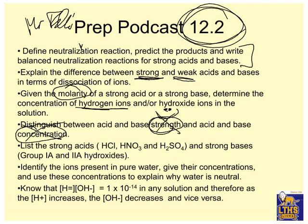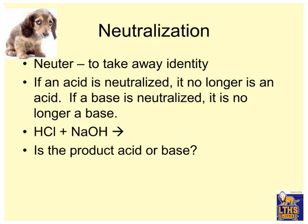And then list the strong acids — I've done that — and the strong bases — I've done that. And identify the ions present in pure water, give their concentrations, and use these concentrations to explain why water is neutral. Wow, that's long and wordy. Know that H⁺ times OH⁻ equals 1 times 10 to the negative 14th. And let's just go ahead and do it.